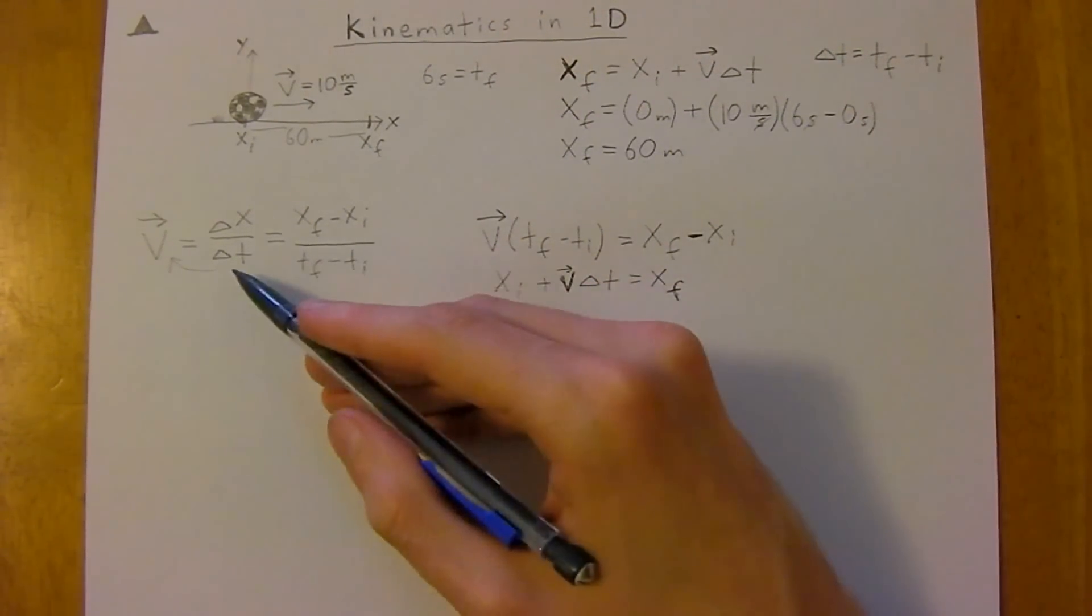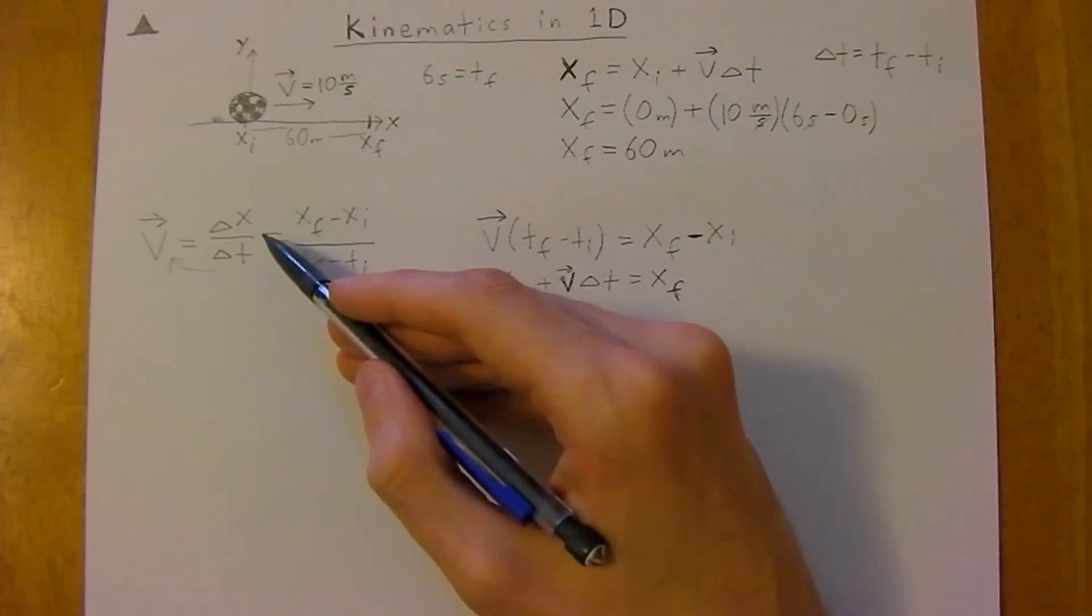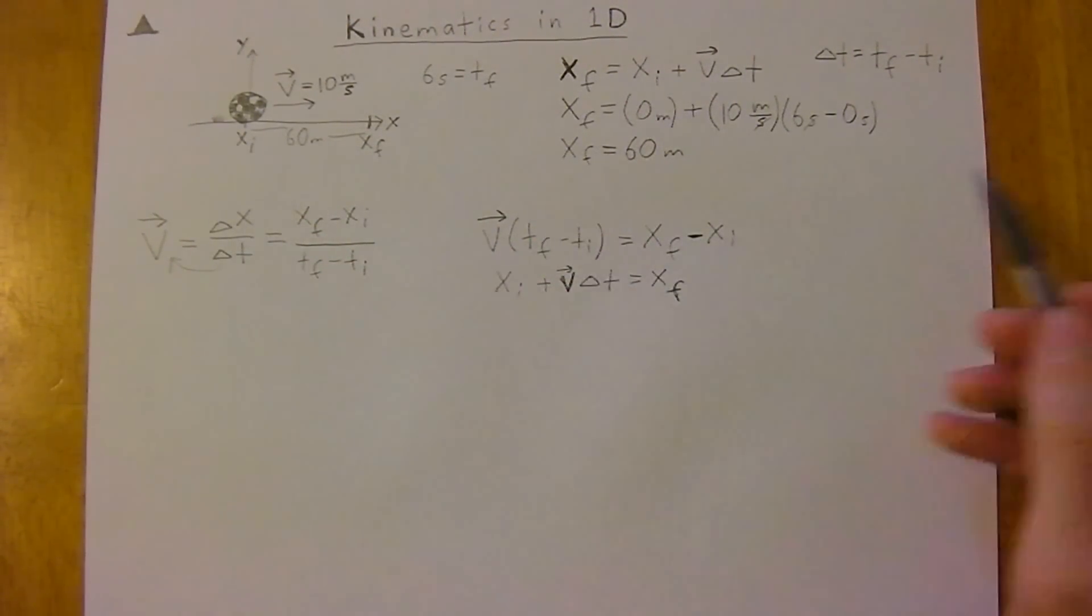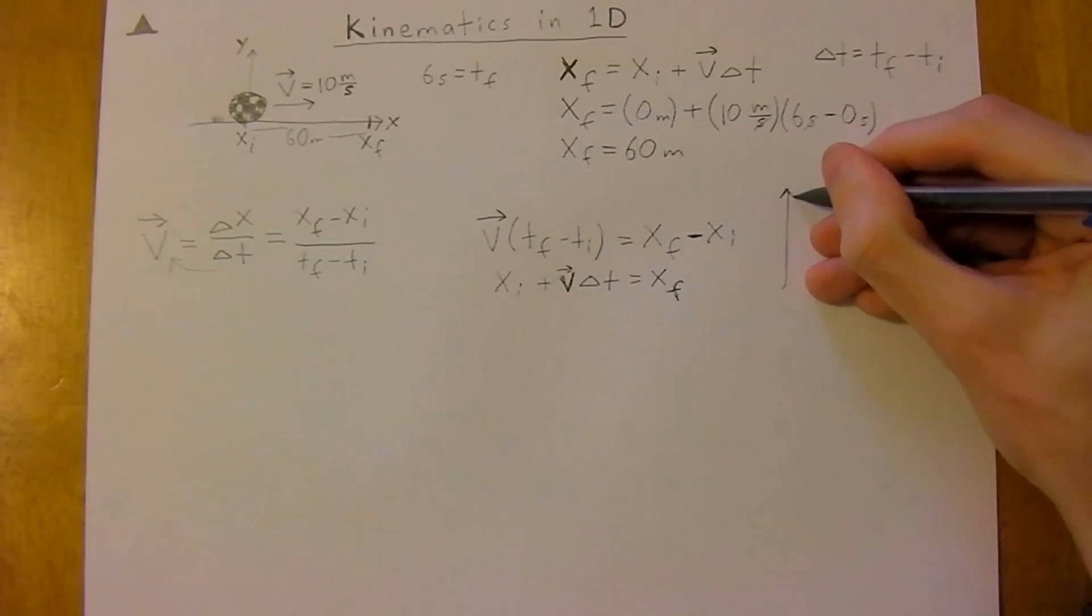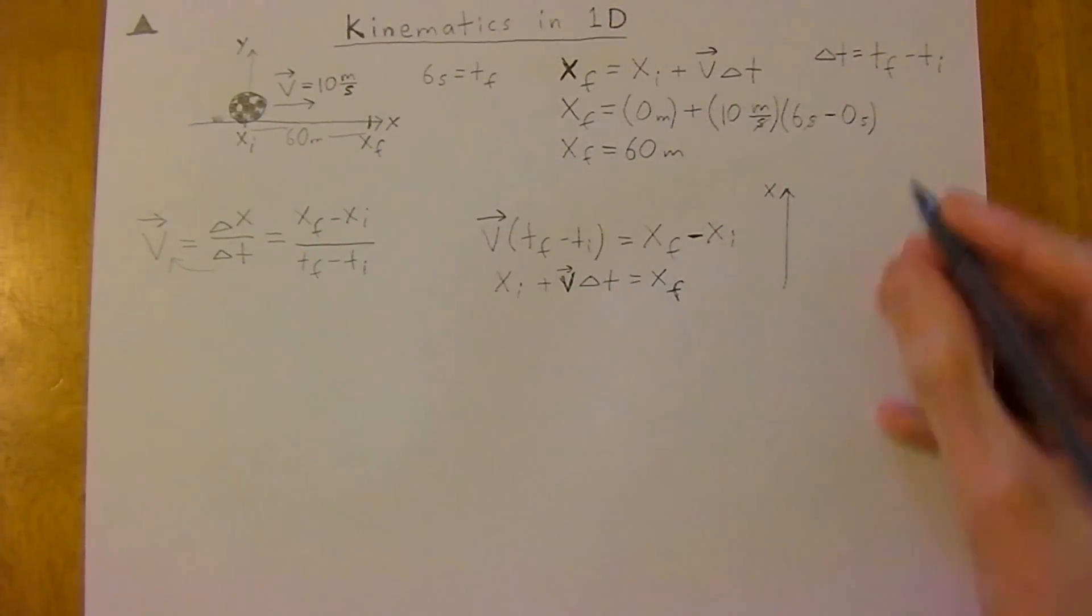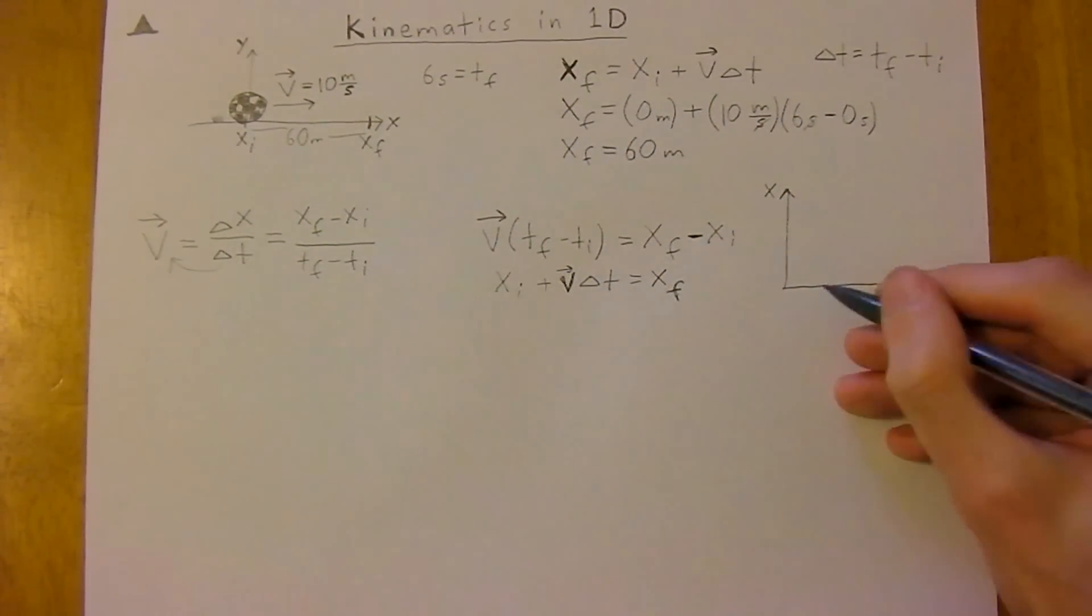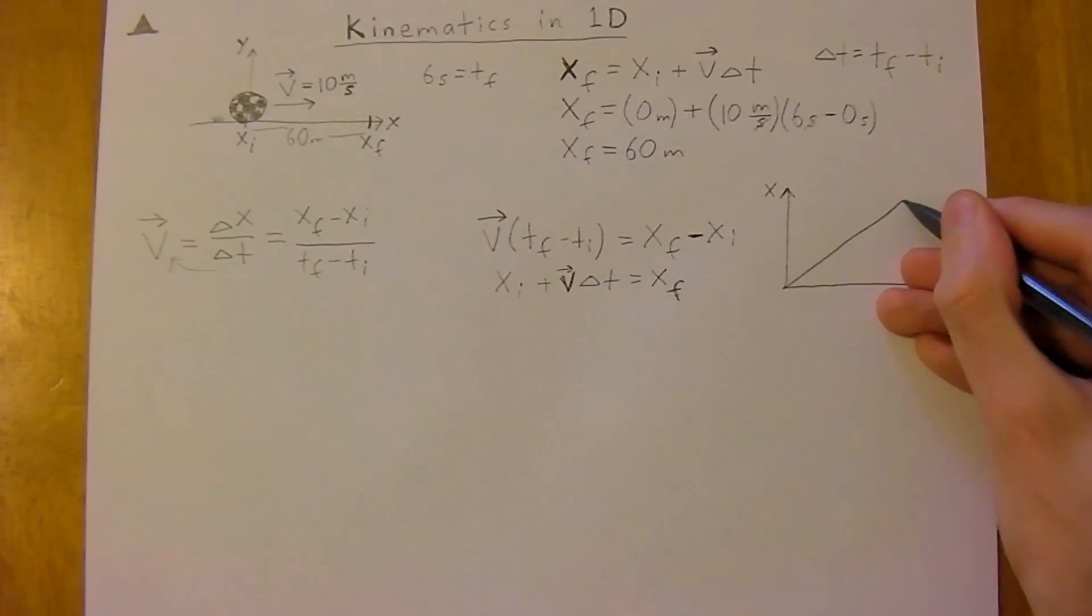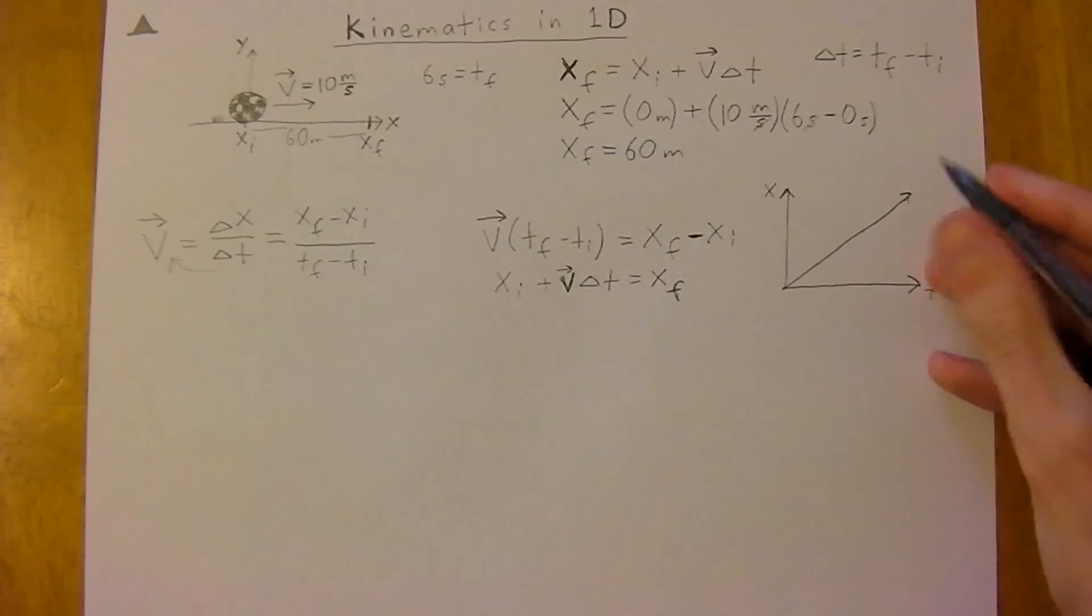But even more important is to also understand that this just comes from the slope of the displacement versus time graph. So we have our displacement in the x-direction, and we have our time. So our graph is going to look something like this. And the slope of this graph will give us our velocity.